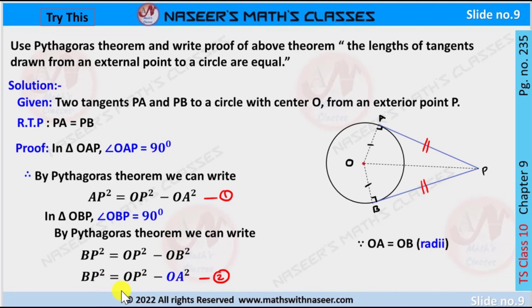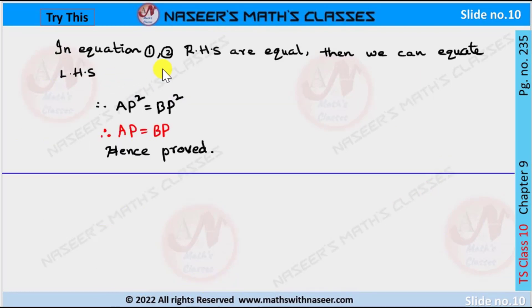Then we can write BP² = OP² - OA², and this is equation 2. In equations 1 and 2, RHS are equal, then we can equate the LHS. Then we can write AP² = BP².